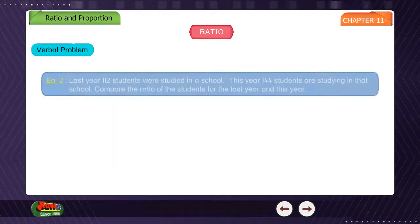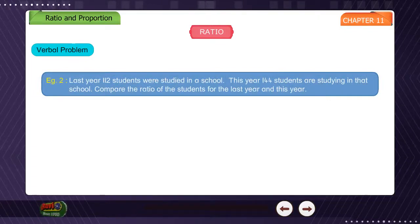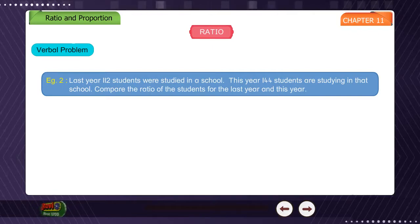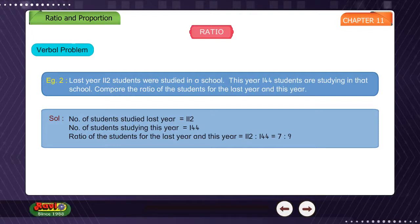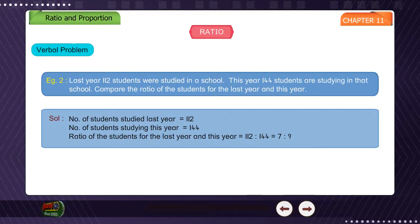Example 2: Last year, 112 students were studying in a school. This year, 144 students are studying in that school. Compare the ratio of students for last year and this year. Solution: Number of students last year is 112, and this year is 144. The ratio is 112 is to 144, which equals 7 is to 9.